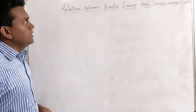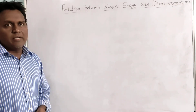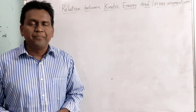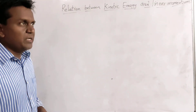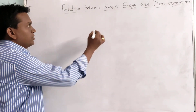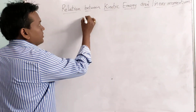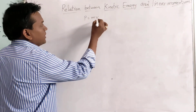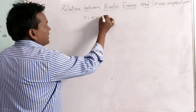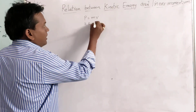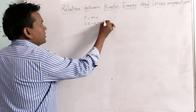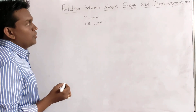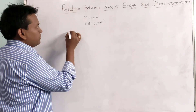Let us have a look at the relation between kinetic energy and linear momentum. In the previous class we discussed what kinetic energy is, and linear momentum is the product of mass and velocity of a body. Linear momentum is represented with the letter P, that is P equal to mv, and kinetic energy KE equal to half mv squared.